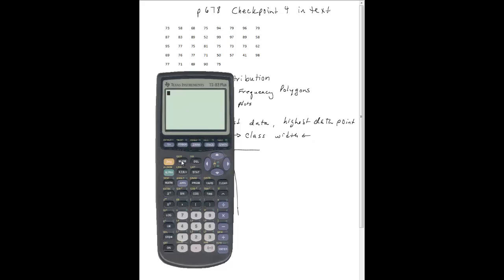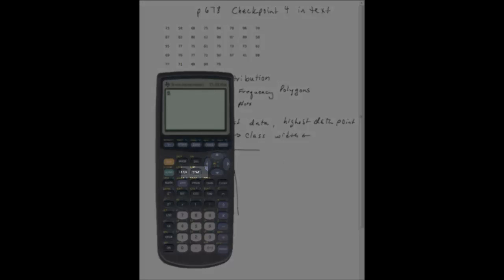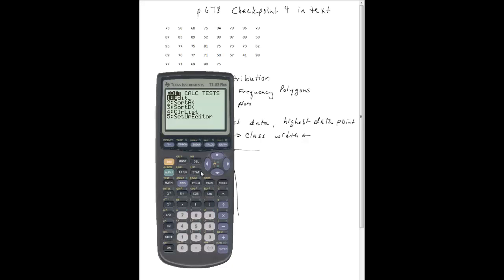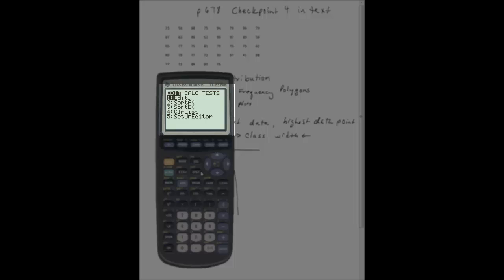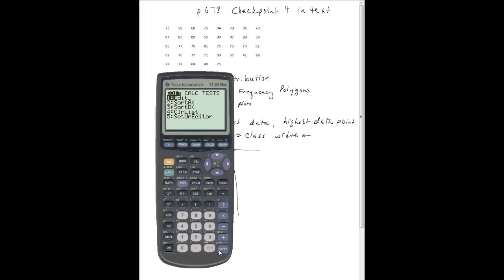So here's my calculator. Most of what I'm going to do for this section is going to deal with the stat button. When I hit the stat button, I see edit, sort A, sort D, and a bunch of other things. First, I'm going to hit edit.